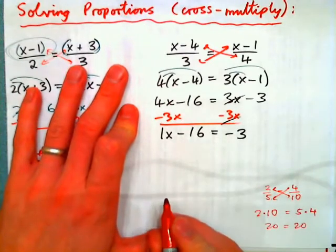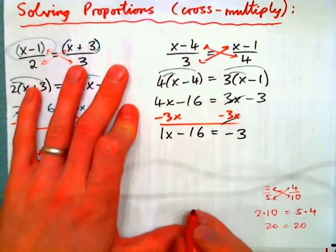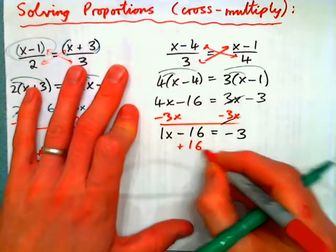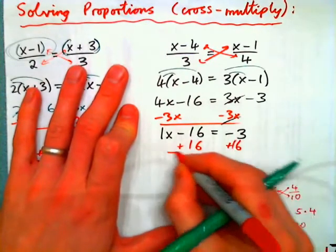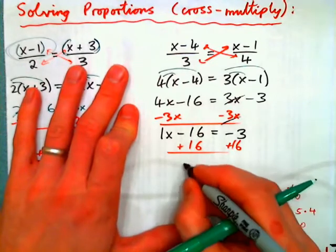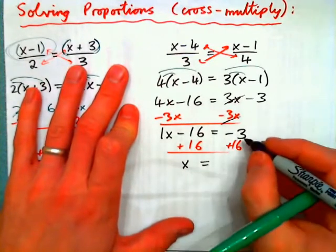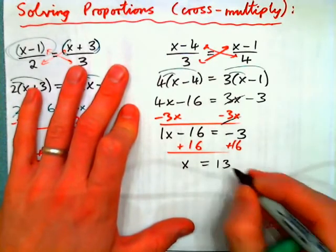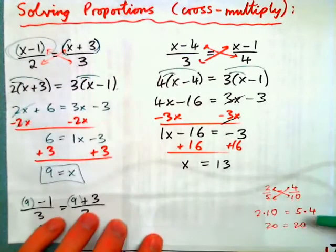Now we get the x by itself. 16 is being subtracted. So, the inverse to that is add 16 to both sides. And we get x equals negative 3 plus 16. 3 negatives and 16 positives is 13 positives. And that's the correct answer.